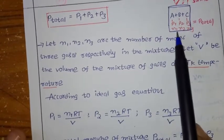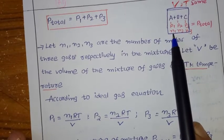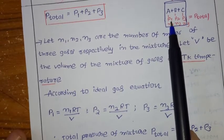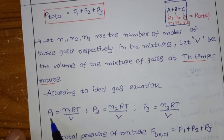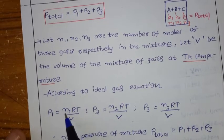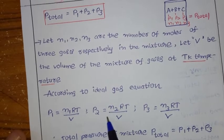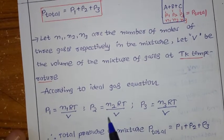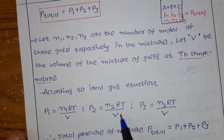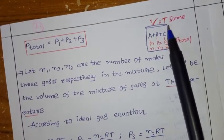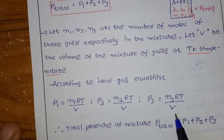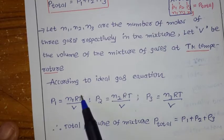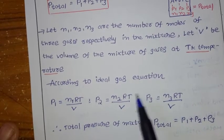Let N1, N2, N3 be the number of moles of the three gases, and V be the volume of the mixture at temperature T Kelvin. Applying the ideal gas equation PV = NRT for each gas: P1 = N1RT/V, P2 = N2RT/V, P3 = N3RT/V. The volume and temperature are the same for all three gases, and R is the universal gas constant.